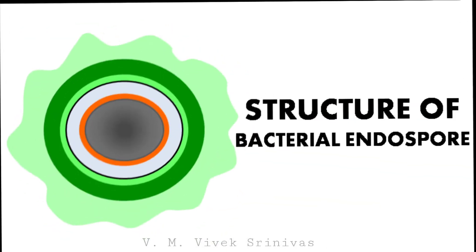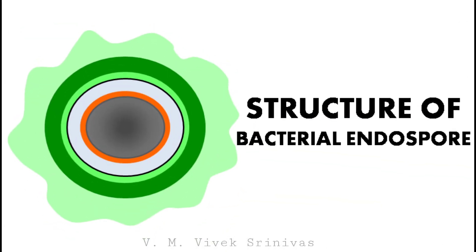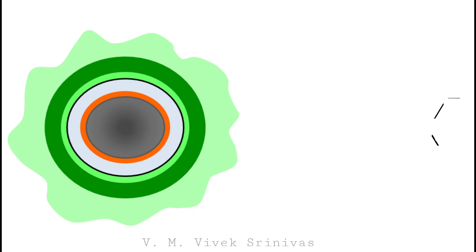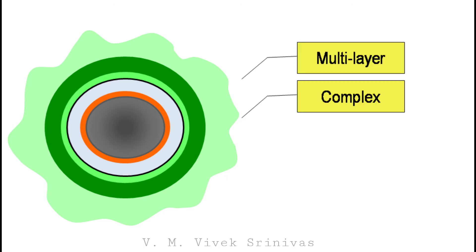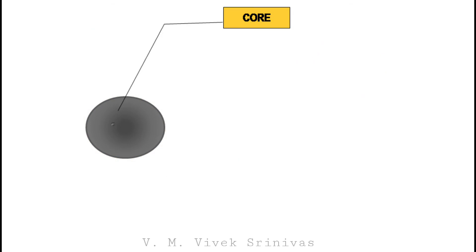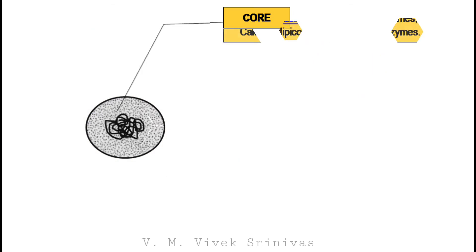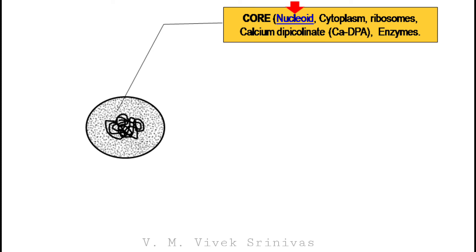Now we will see about the structure of the endospore. The mature endospore is a multi-layered and complex structure. The innermost part is called the core. The core contains the nucleoid — that is, the bacterial DNA — then the cytoplasm, the ribosomes, and importantly, the calcium dipicolinic acid and the enzymes.